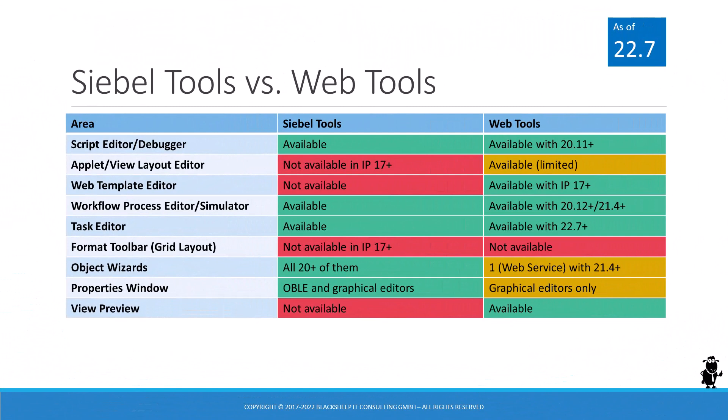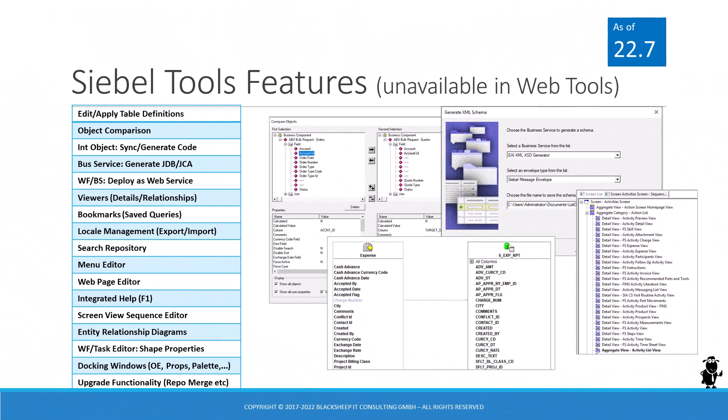The changes introduced to Web Tools and Workspaces with the Siebel CRM 22.7 update are a good reason for a quick back check. Let's arrange a friendly stare-down of Siebel Tools vs. Web Tools. We can see that Web Tools has gained significantly with 22.7, only lagging behind in a few areas, such as limitations in the applet layout editor, object wizards, and the properties window. If we expand the list to include Siebel Tools features currently unavailable in Web Tools, we still find quite a lot of items.